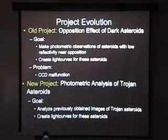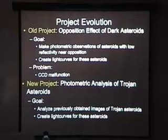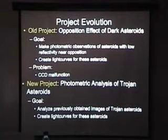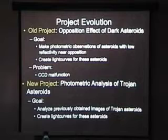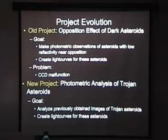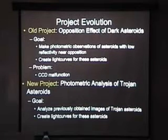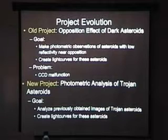However, midway through taking the images, the CCD malfunctioned — the CCD is the detector we use to take images. So it was decided that I would switch over to a new project, which started right where I left off. I obtained some images that Dr. Bill and his student Aaron Cooper gathered at Kitt Peak National Observatory in Arizona. They took images of Trojan asteroids, and from them I created light curves. I'll explain what Trojan asteroids and light curves are in a minute.